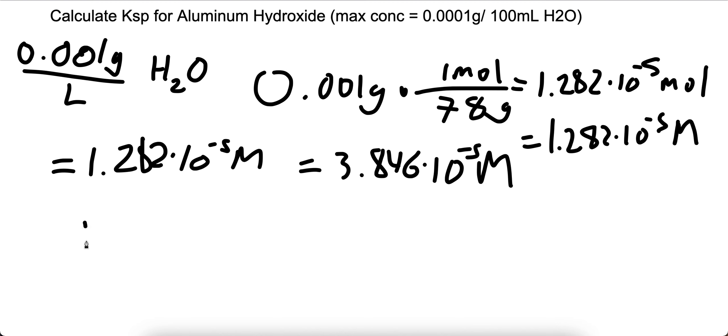To find Ksp, we multiply the concentration of Al and the concentration of OH. But this is to the third power because we have three OHs in one Al(OH)3.